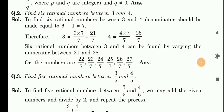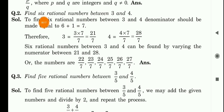Question number 2 is: Find 6 rational numbers between 3 and 4. हमको बताना है इनके बीच में 6 rational numbers. So first, look at how many numbers we need to find — 6. So the required number will be 6, और उसमें एक add कर देंगे — 6 plus 1 कितना हो जाएगा? 7.